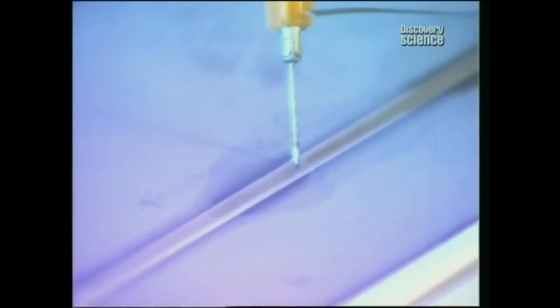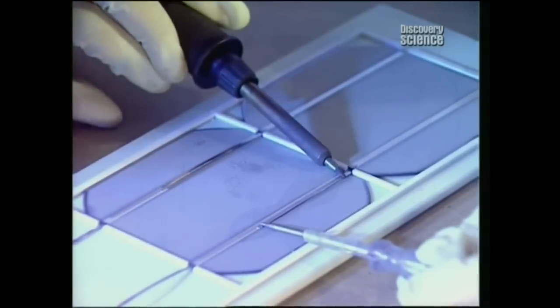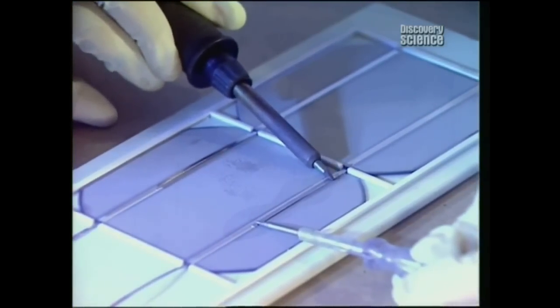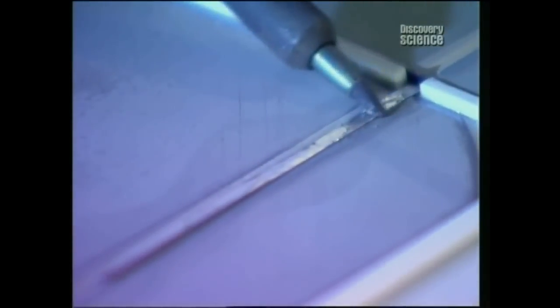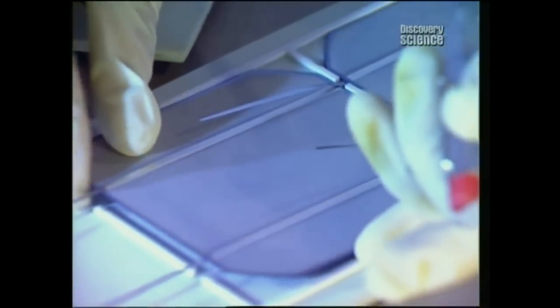Now they can proceed with soldering the modules together. First, a flux is applied, which improves the quality of the soldering. With great dexterity, four groups are assembled, composing of nine modules each. In this way, 36 modules are soldered and connected in series.